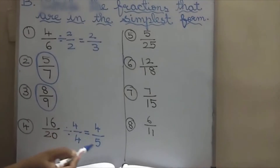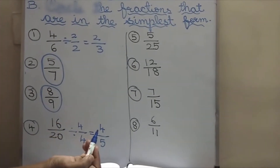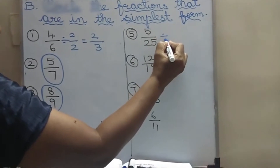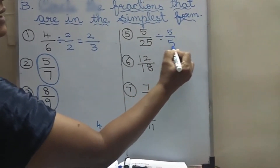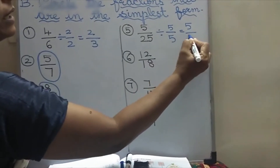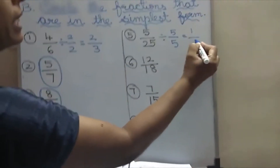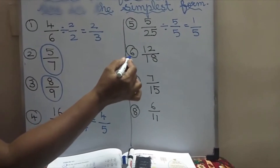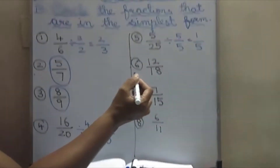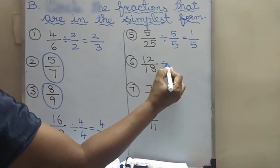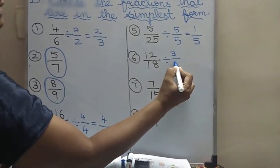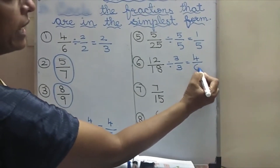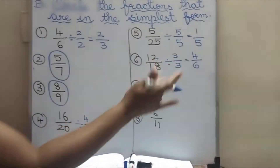This one only we call the simplest form, but we can't circle this one because we can divide it. Here, 5 by 25 — it goes in same tables: 5 by 5. 1 5 is 5, and 5 5s are 25 — so this is also not the simplest form. And then 12 by 18 — this also goes in same tables: 3 by 3. 4 3s are 12 and 6 3s are 18 — so this is also not the simplest form.